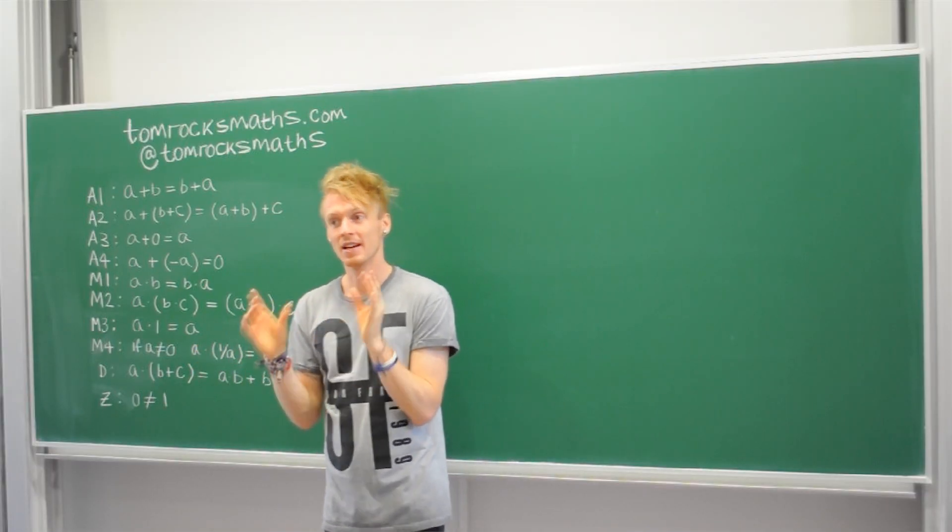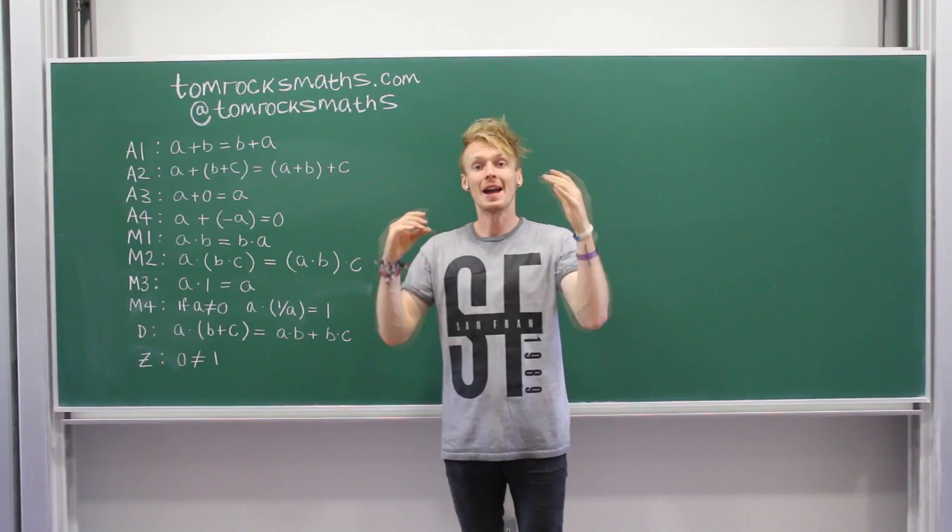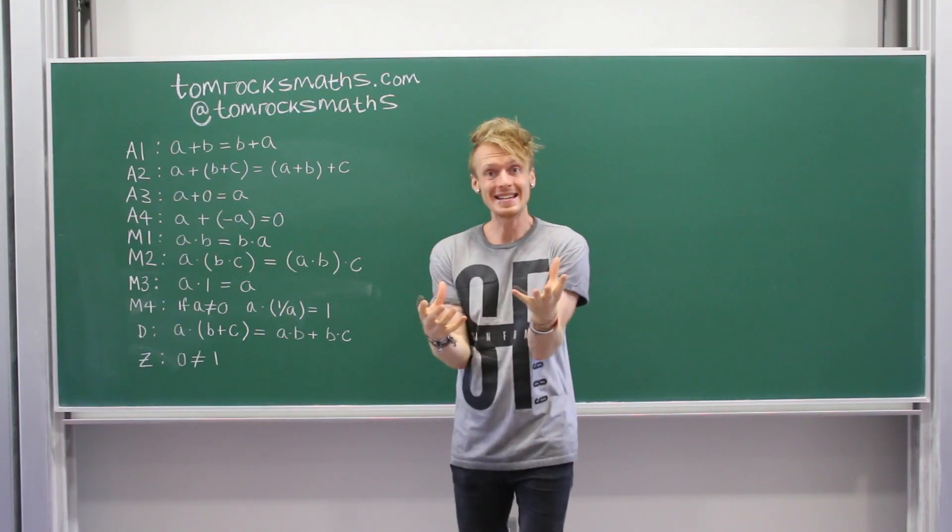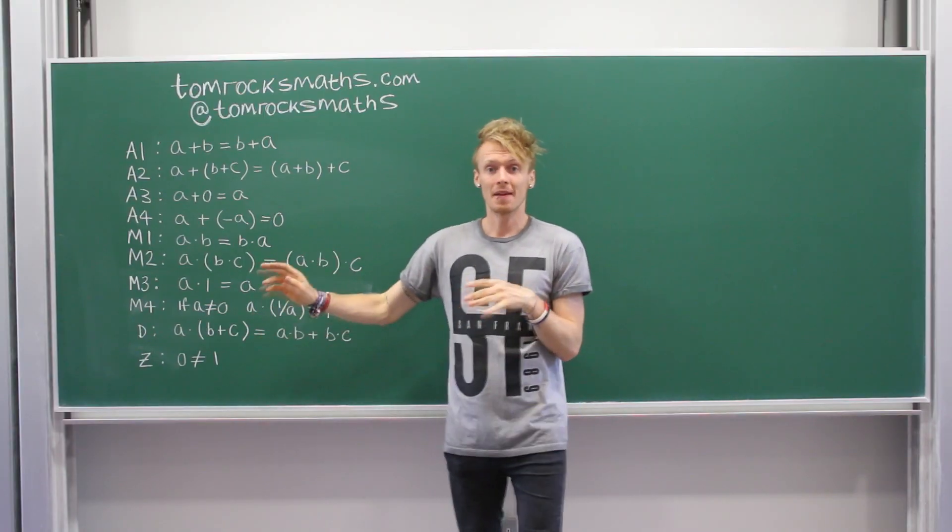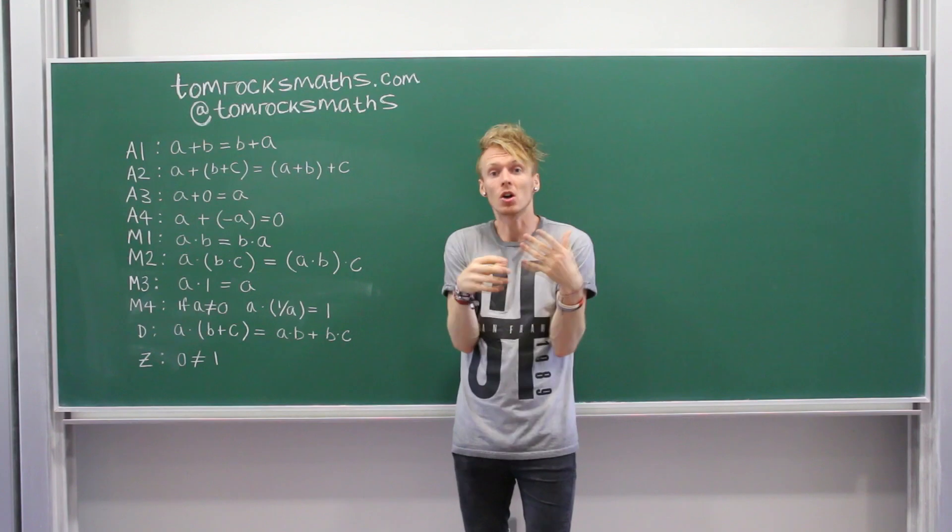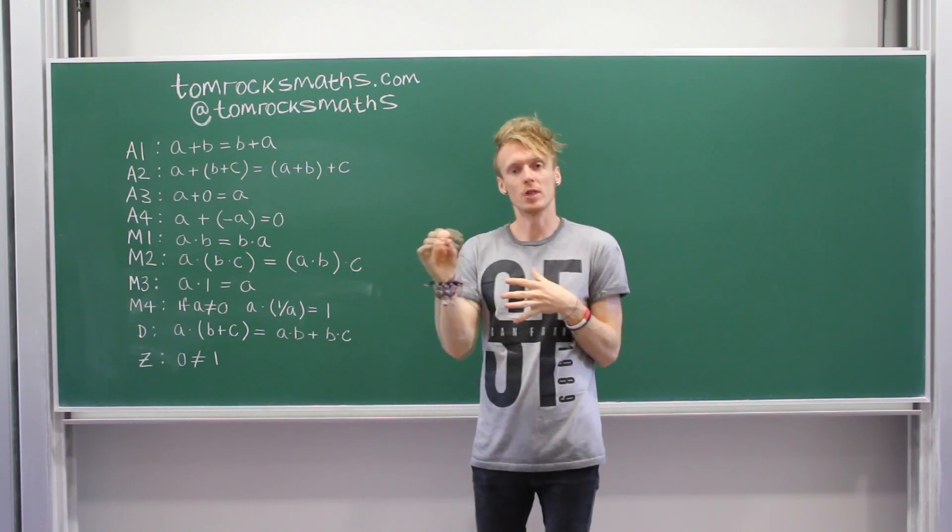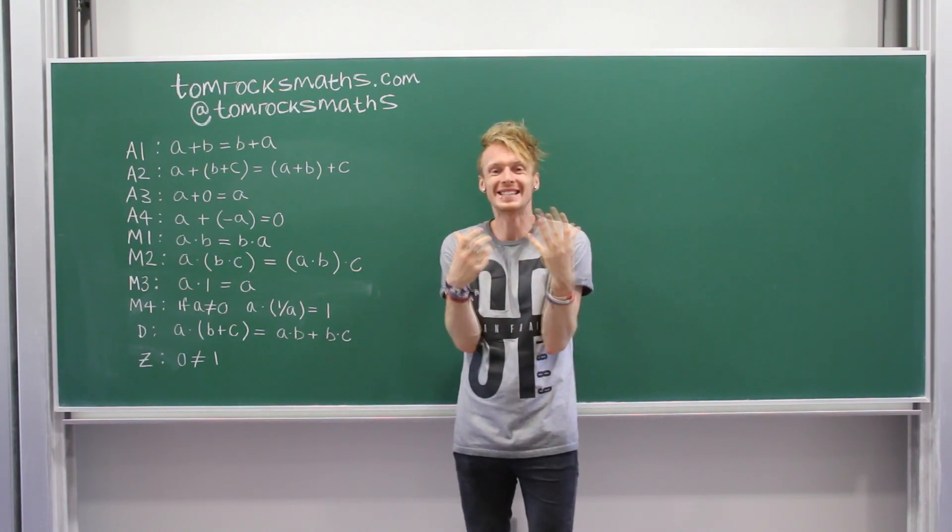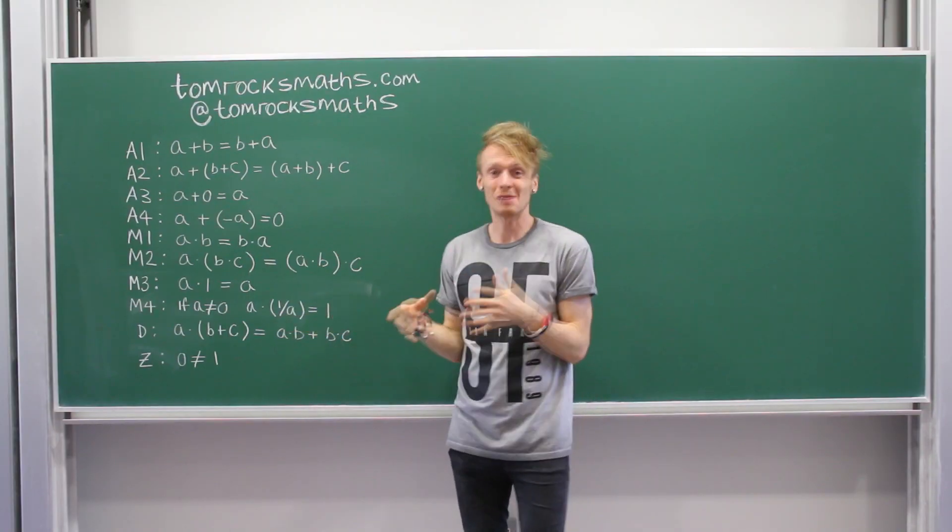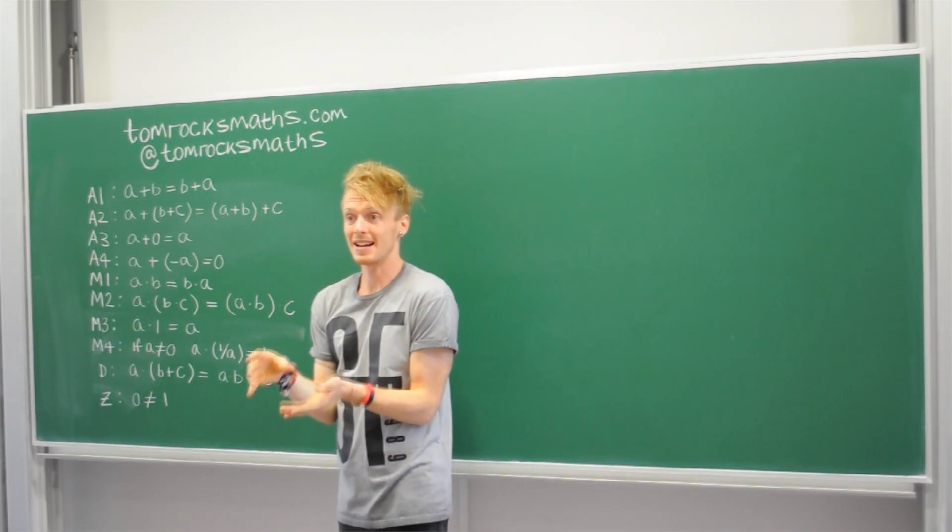And then we have our final two axioms, which are sort of stand-alone. We have D, the distributive law. This is just telling you what happens when multiplication and addition occur at the same time. So it's telling you which one comes first and how to deal with that situation. And it's basically just telling us how to multiply brackets. And the last axiom, axiom Z, is by far my favourite.